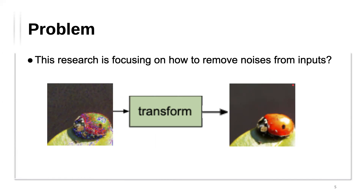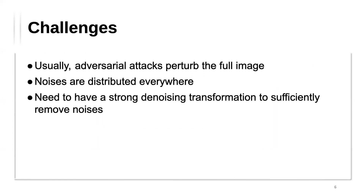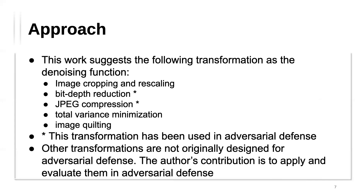This paper tries to find an effective transformation function to remove noises from inputs. The challenge for the model-agnostic approach is that adversarial perturbations are applied on the full image, so noises are distributed everywhere and we need a strong denoising transformation. The paper suggests using the following transformations: image cropping, bit depth reduction, JPEG compression, total variance minimization, and image quilting. Except for bit depth reduction and JPEG compression, these are not originally designed for adversarial defense — the authors' contribution is to apply and evaluate them in the adversarial defense scenario.